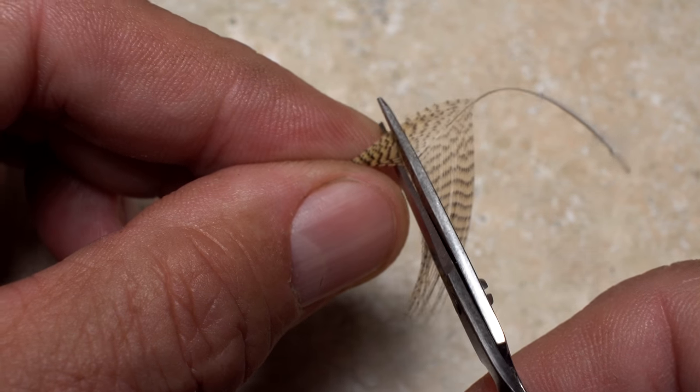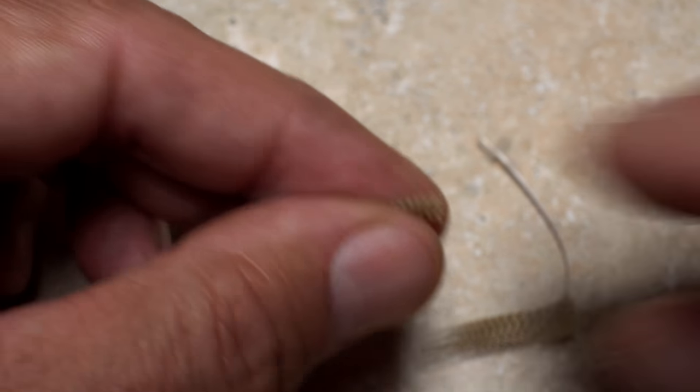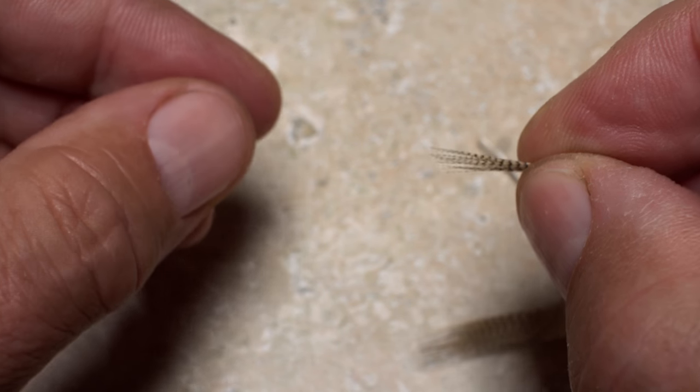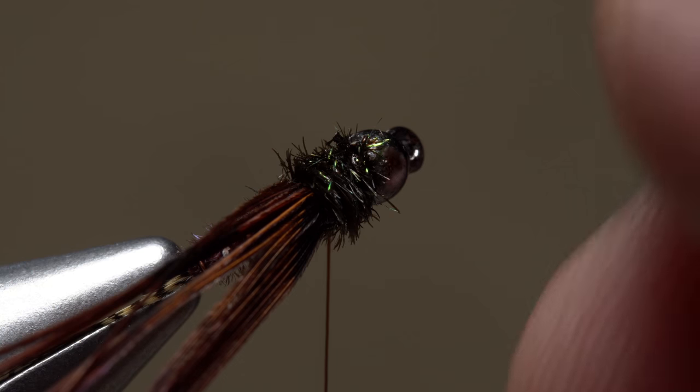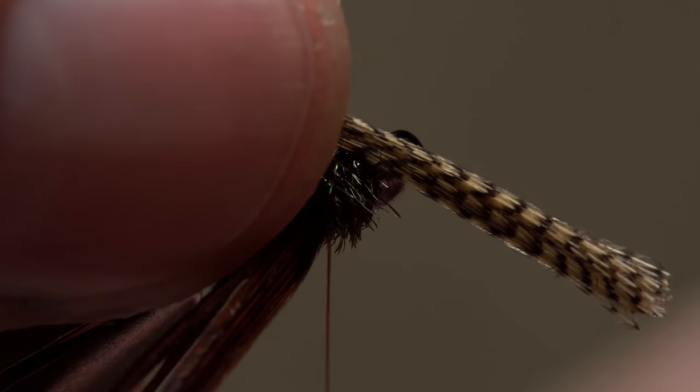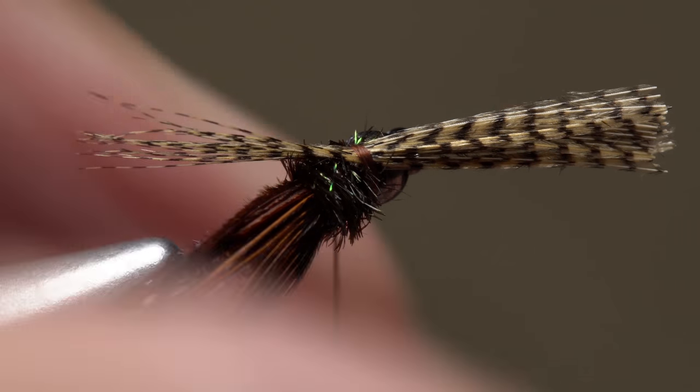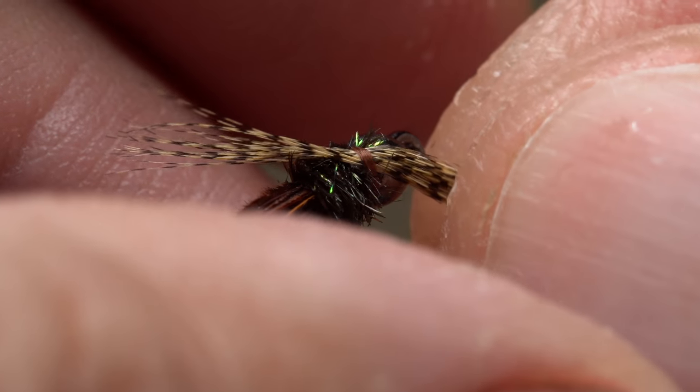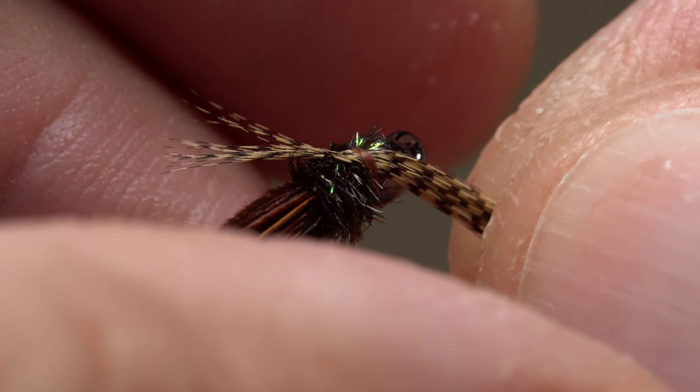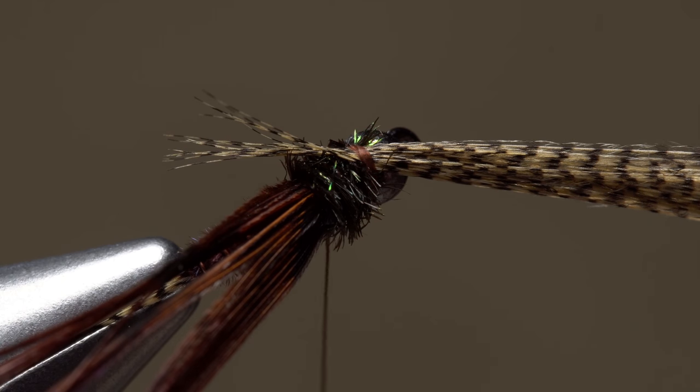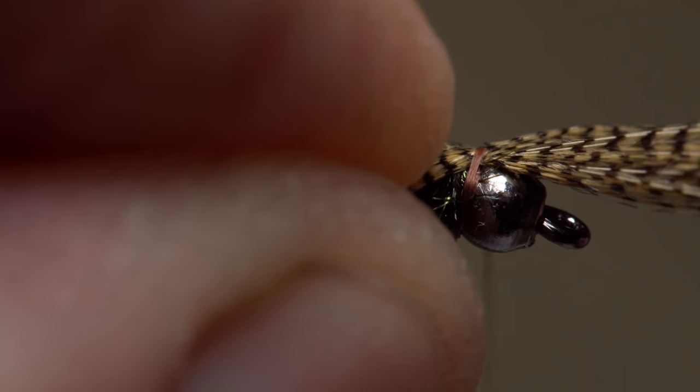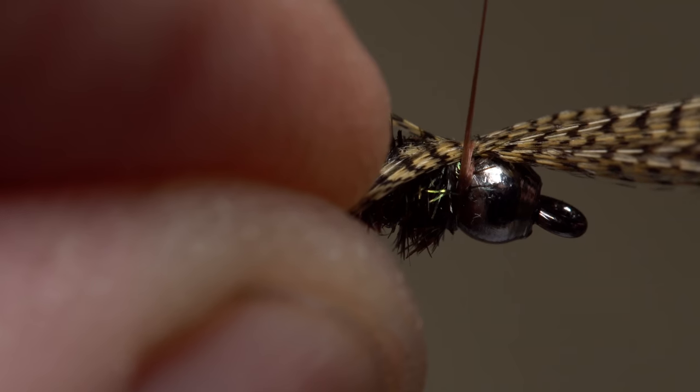Now, locate that duck feather you stashed away and corral the fibers on one side before snipping them off. Their tips should be roughly aligned. Lay the fibers diagonally across the top of the hook shank behind the bead and take a couple of thread wraps to lightly secure them. This will allow you to pull the fibers until they form legs about half a hook shank in length. Repeat this same procedure with the fibers on the other side of the feather.